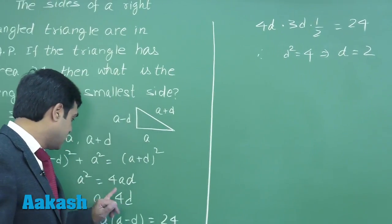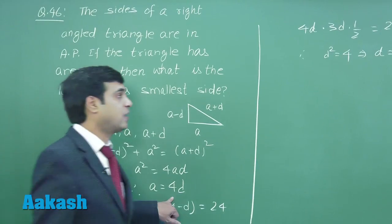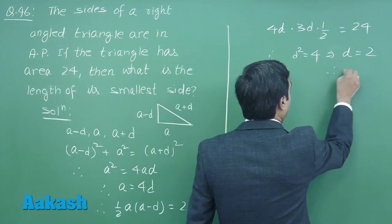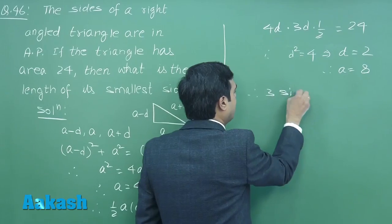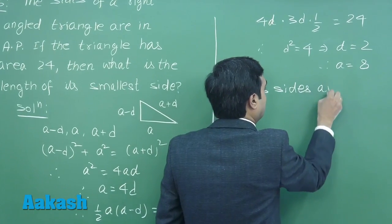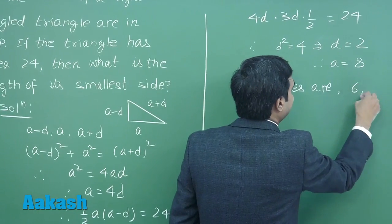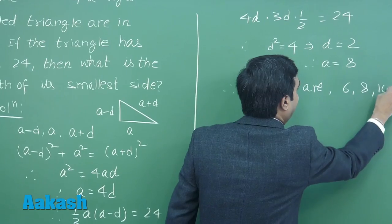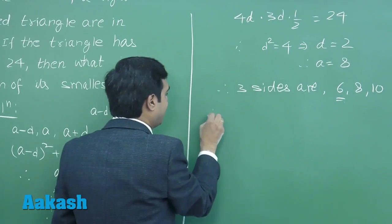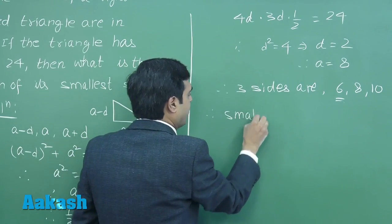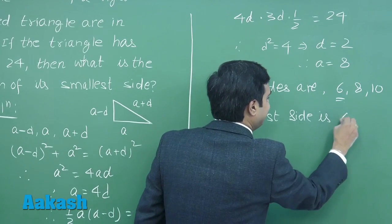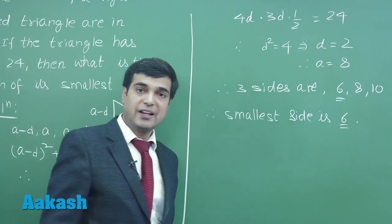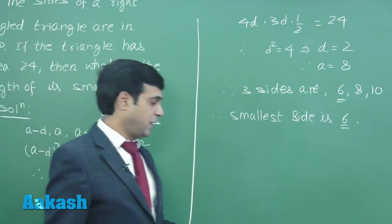This is clear, therefore d² = 4 or d = 2. We get the value for d as 2, so substituting here we will get a = 8. So the three sides are 6, 8, and 10, and the smallest side is 6. This point is clear. Let us move to the next one.